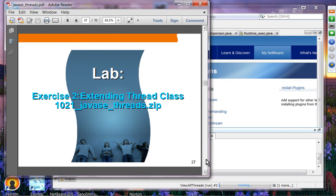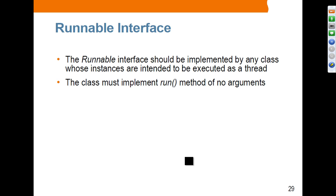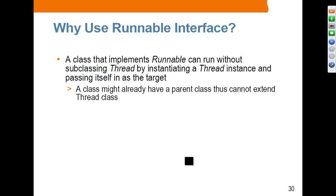The second scheme is implementing the Runnable interface. The Runnable interface should be implemented by any class whose instances are intended to be executed as a thread. The implementing class should provide a run() method. The reason to use Runnable is that some classes already have a parent class, which means they cannot extend Thread class. In that case, if you want to make that class execute as a thread, it must implement the Runnable interface.